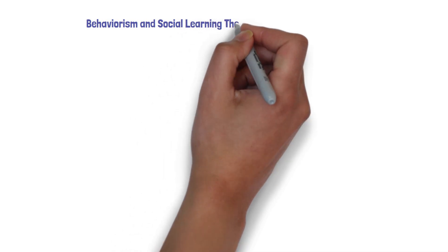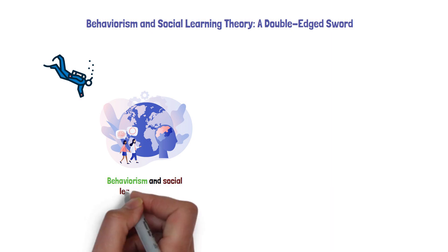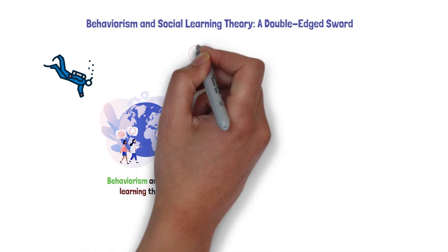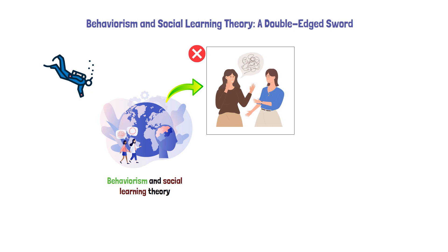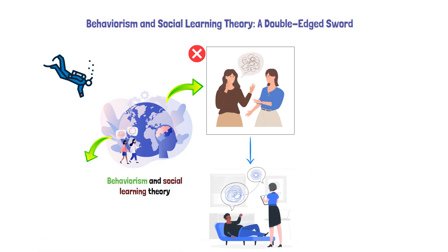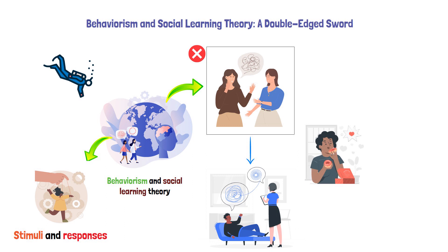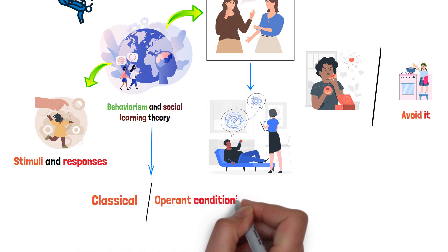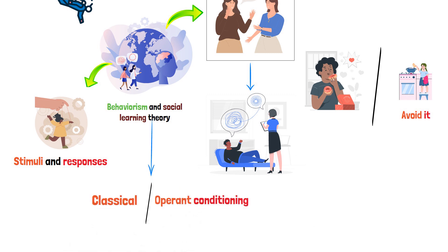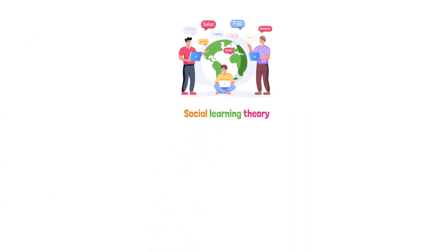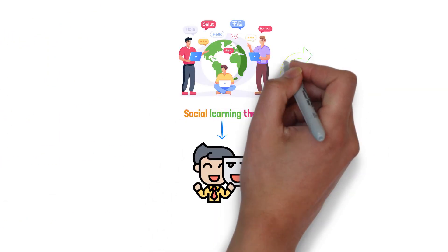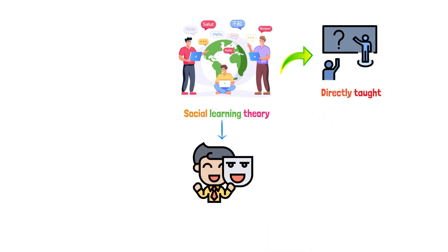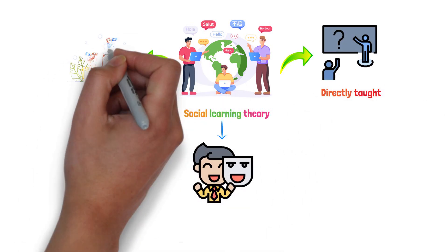Behaviorism and social learning theory — a double-edged sword. Behaviorism is the no-nonsense, straight-to-the-point approach to psychology. It's all about stimuli and responses: you see a cookie, you eat it; you touch a hot stove, you learn to avoid it. Behaviorism uses techniques like classical and operant conditioning to shape behavior. On the other side, we have social learning theory, where imitation is the name of the game — it's not just about what you're directly taught, but also what you pick up from observing others.